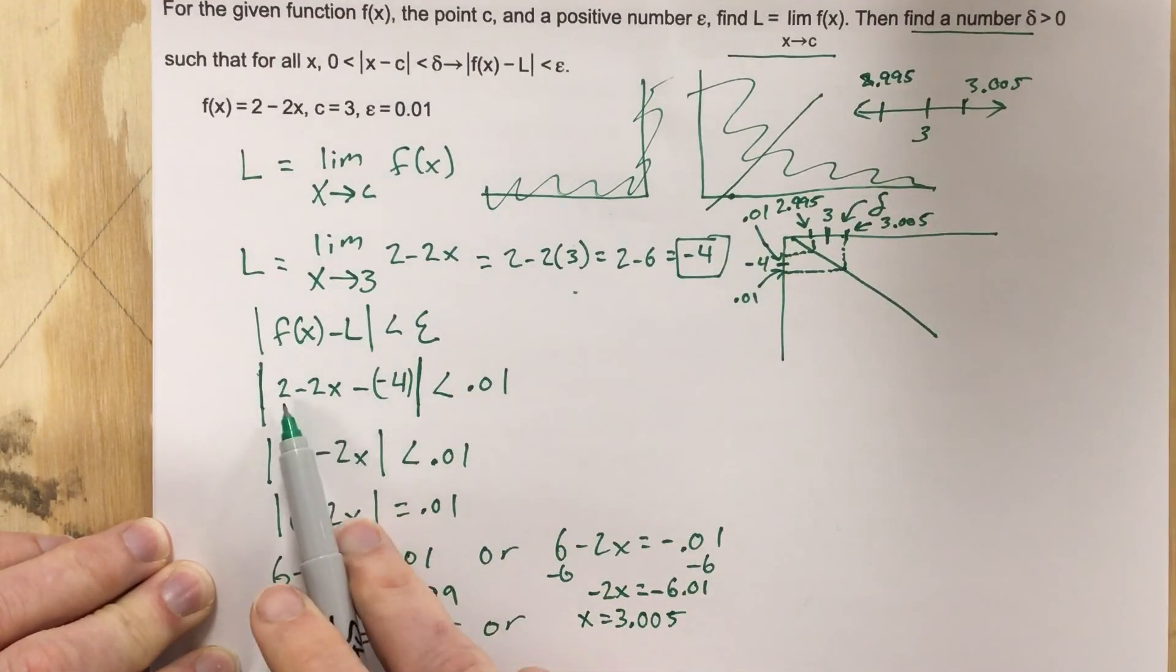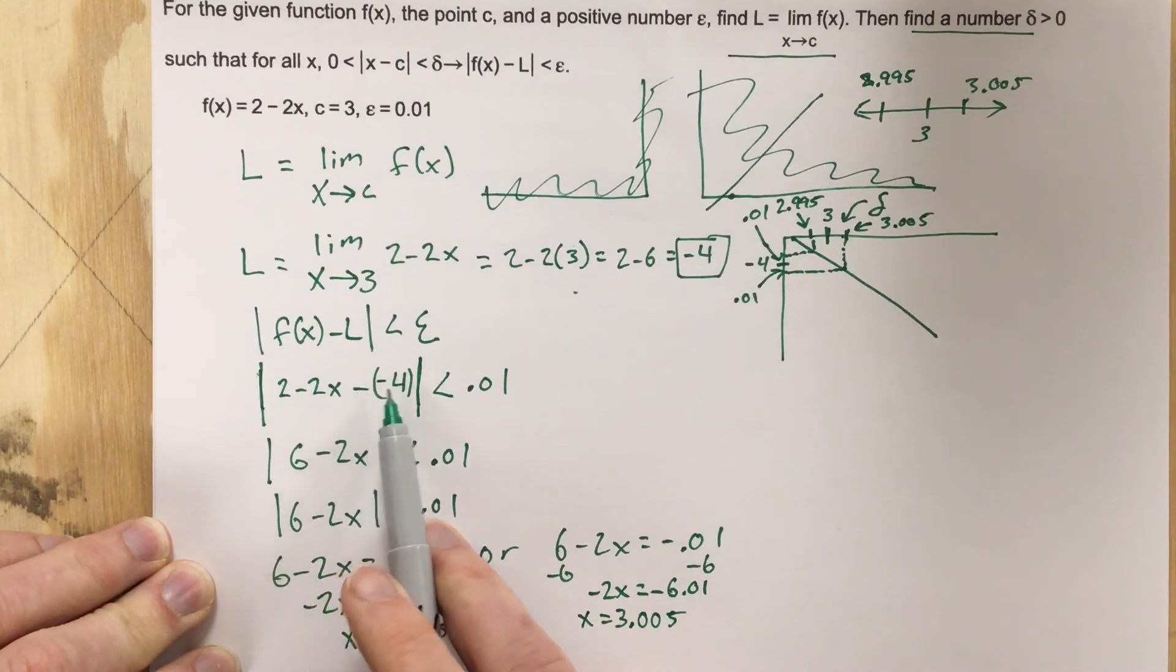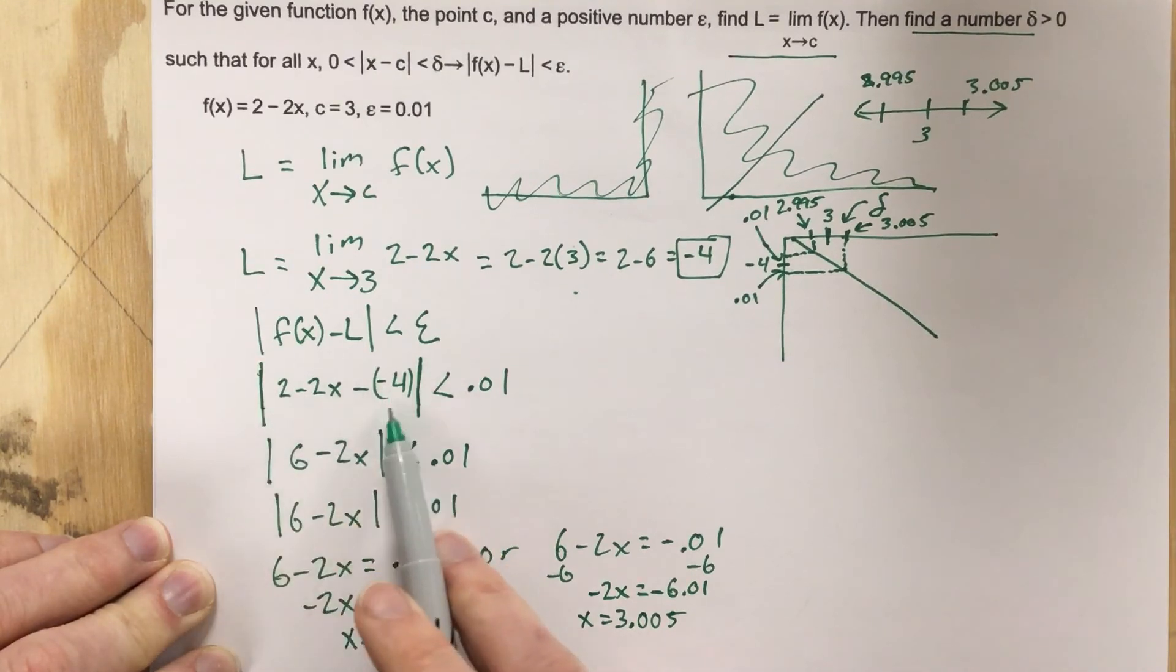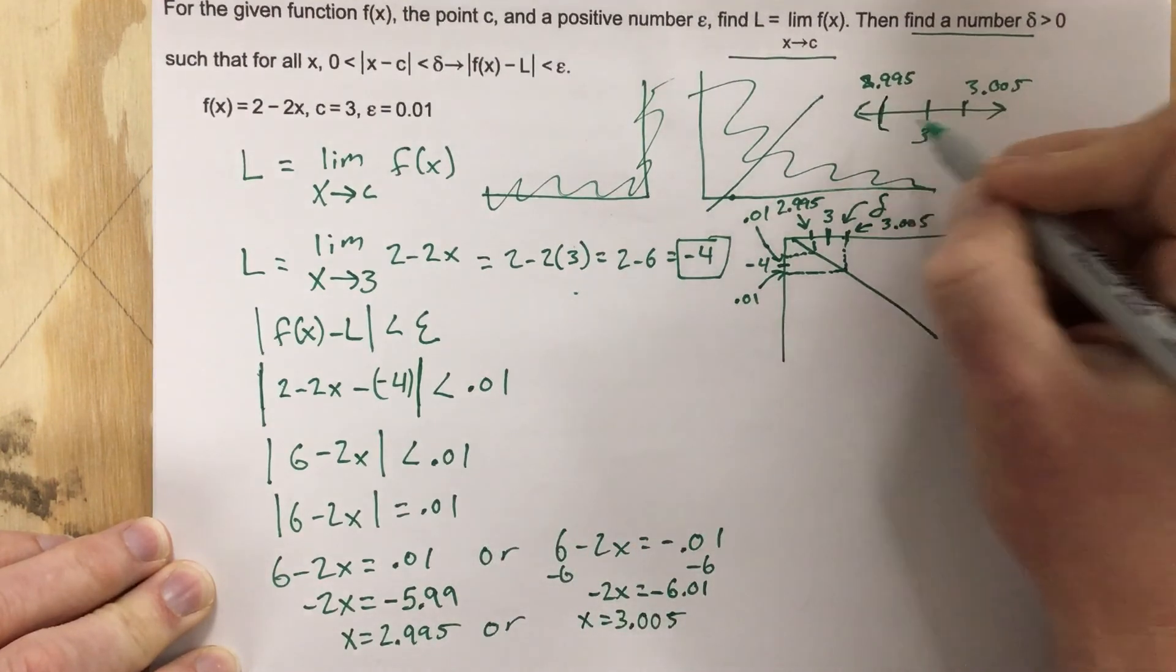When I plug 3 here, I get 2 minus 6, because 2 times 3, so that's negative 4. And then minus negative 4, that would be plus 4, so I end up with 0, absolute value of 0, less than 0.01, yes. So they run from here to here.